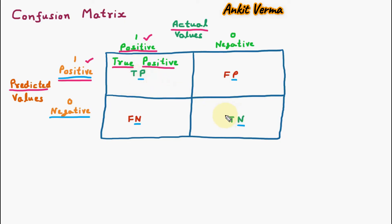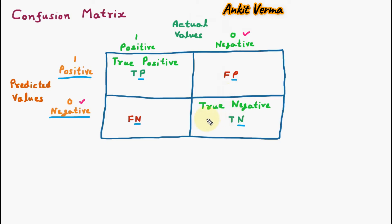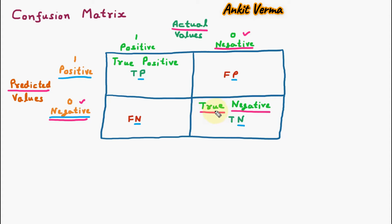Now we are moving to TN, which is true negative. This cell falls under prediction is negative and actual is also negative. Let us suppose that we have predicted somebody is not having a disease — this is a negative prediction — and when we tested actually, it was negative, meaning they are not having a disease. So our prediction of not having a disease is actually right or true. This is true negative.